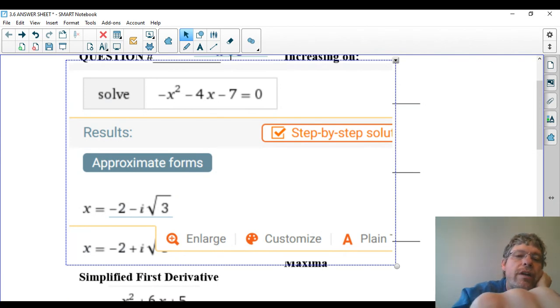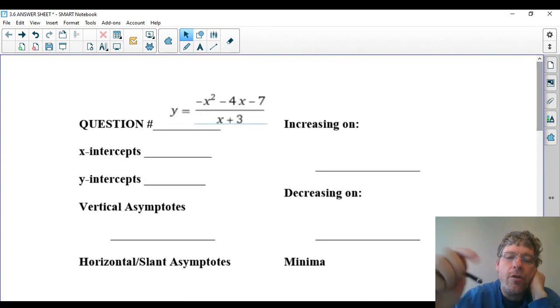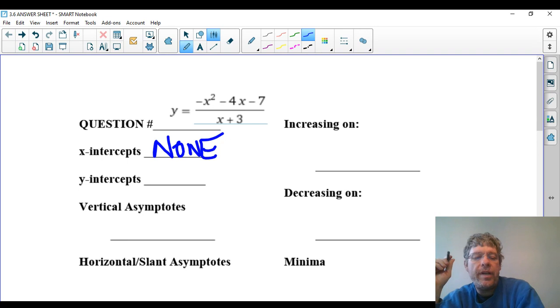So there is no x-intercept. You would have found that with the quadratic formula, but why bother when we have Wolfram Alpha there? So I'm going to say none to that. That's important, because we know now it does not go through the x-axis.